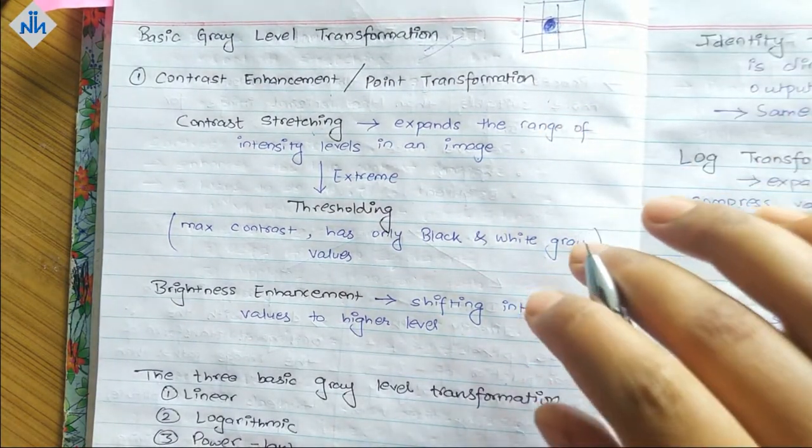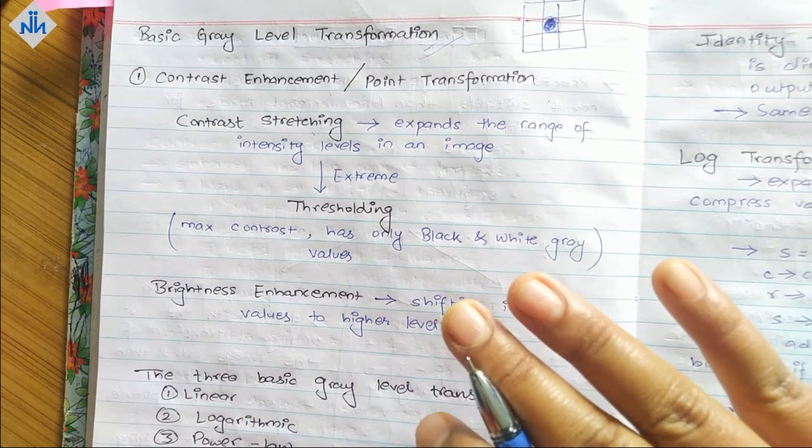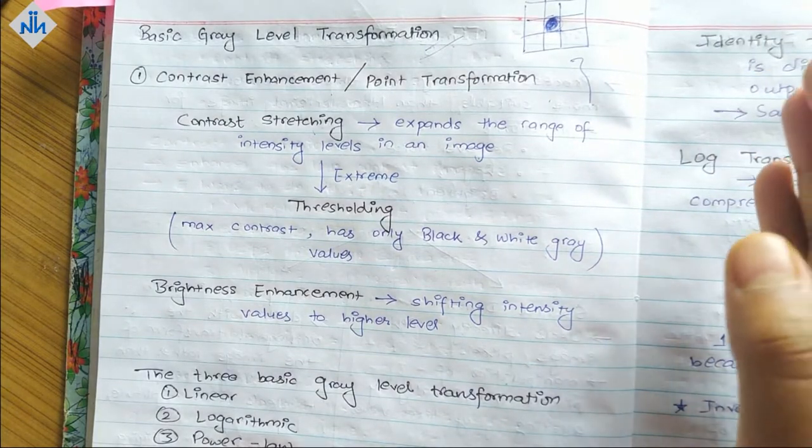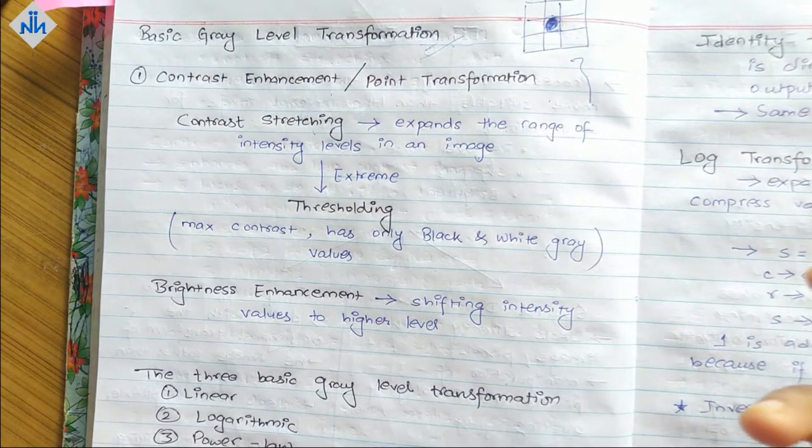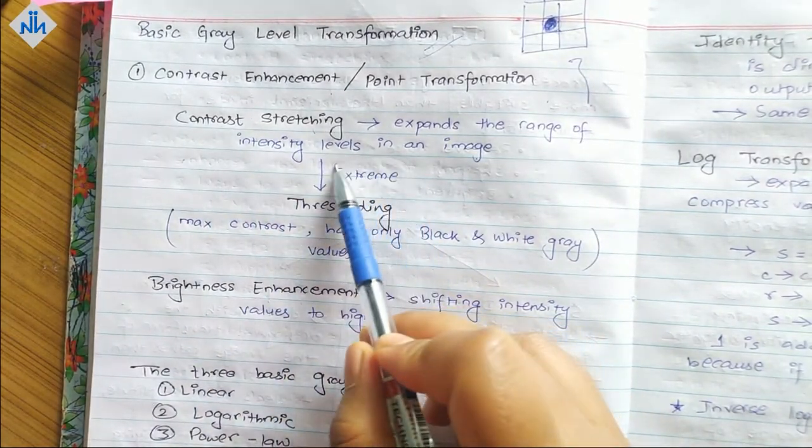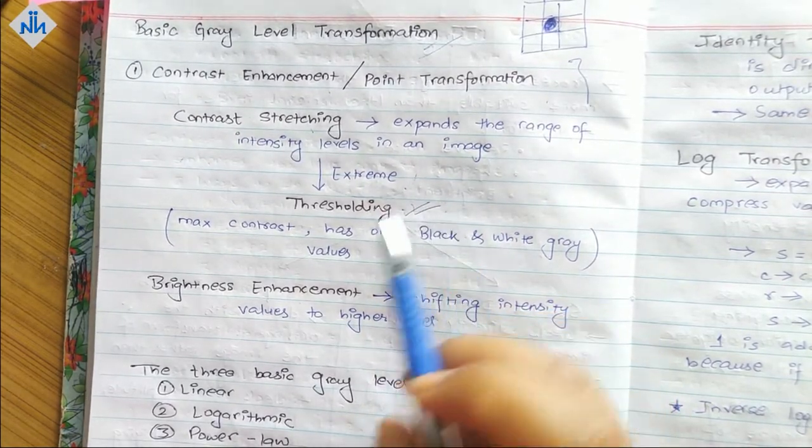You can basically distinguish the image better. The darker ones will be more distinguishable and the brighter ones more distinguishable. That is what contrast stretching does. When we do it at a very extreme level, that is known as thresholding. We keep applying contrast stretching, making darker ones even darker and brighter ones even brighter.